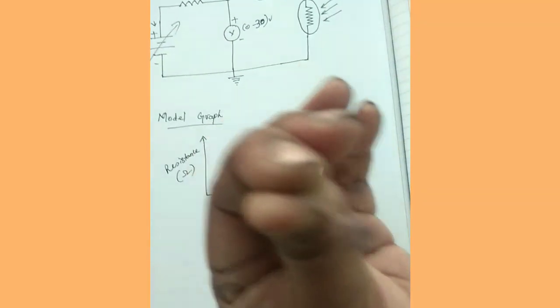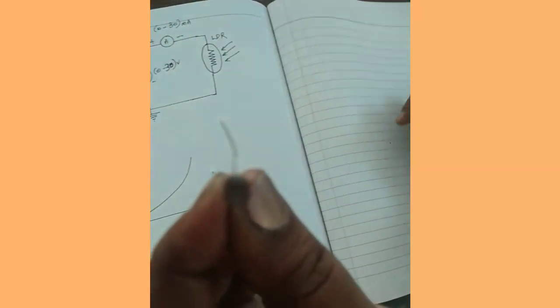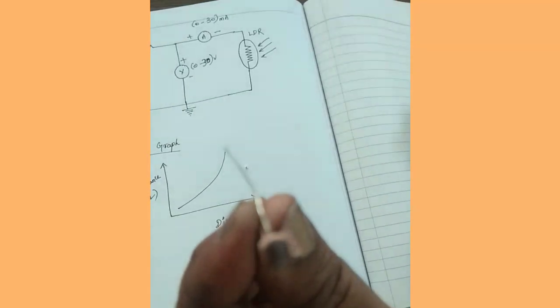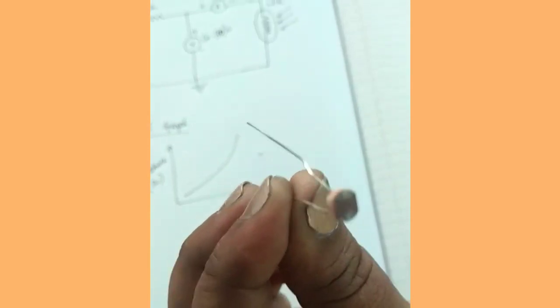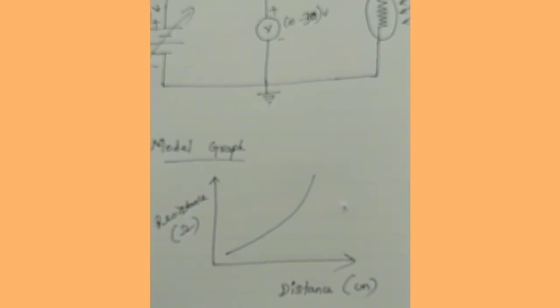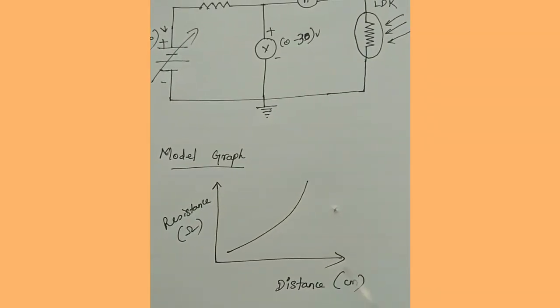It is a two terminal device. As you can see, this is a light dependent resistor. As the intensity of the incident light increases, the resistance decreases. That is the property of an LDR.